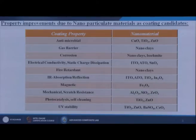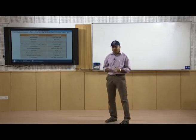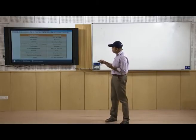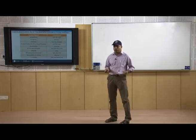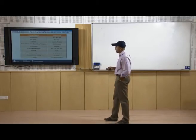For IR absorption and reflection, ITO, ATO, TiO2, and indium oxide can be used. Magnetic properties can be achieved using Fe2O3. For mechanical scratch resistance, Al2O3, SiO2, and zirconia oxide are suitable. For photocatalysis and self-cleaning, TiO2 and zinc oxide are used. For UV stability, TiO2, zinc oxide, barium sulphate, or CeO2 can be applied to change the properties of the substrate.